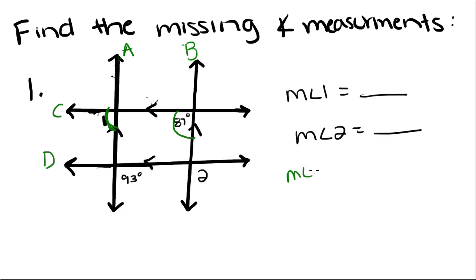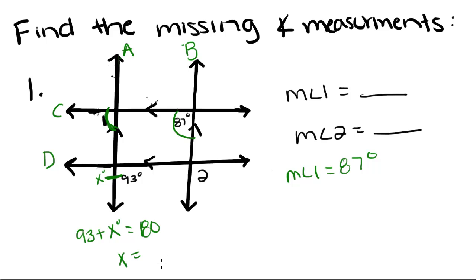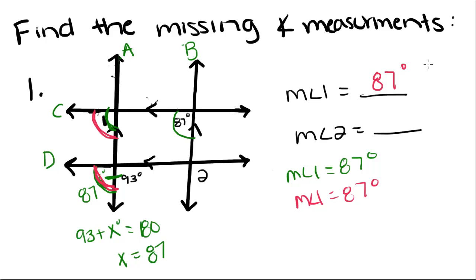We can find that the measure of angle 1 is 87 degrees using corresponding angles. Or, since these two angles are supplementary, we can set 93 plus X equal to 180, subtract, and find that X equals 87 degrees. And since parallel lines C and D are cut by transversal A, this angle is congruent to angle 1, confirming angle 1 equals 87 degrees. Those are two different ways you can do it.